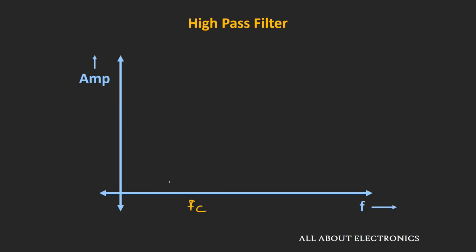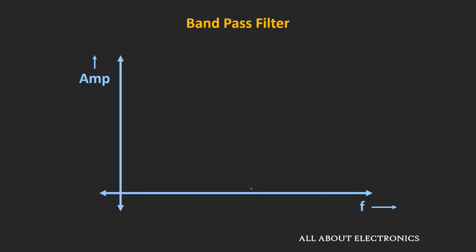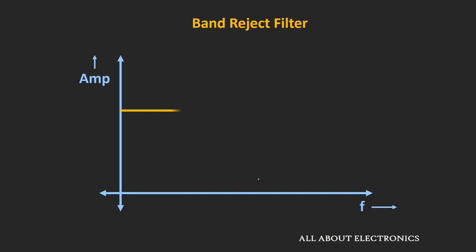The second type of filter is the high-pass filter. This high-pass filter passes all high-frequency components starting from the cutoff frequency, and it rejects all frequencies lesser than this cutoff frequency. The third type is the band-pass filter, which passes frequencies within a certain band and rejects all frequencies outside that band. The fourth type is the band-reject filter, which rejects all frequency components within a certain band and passes all frequencies outside that band.